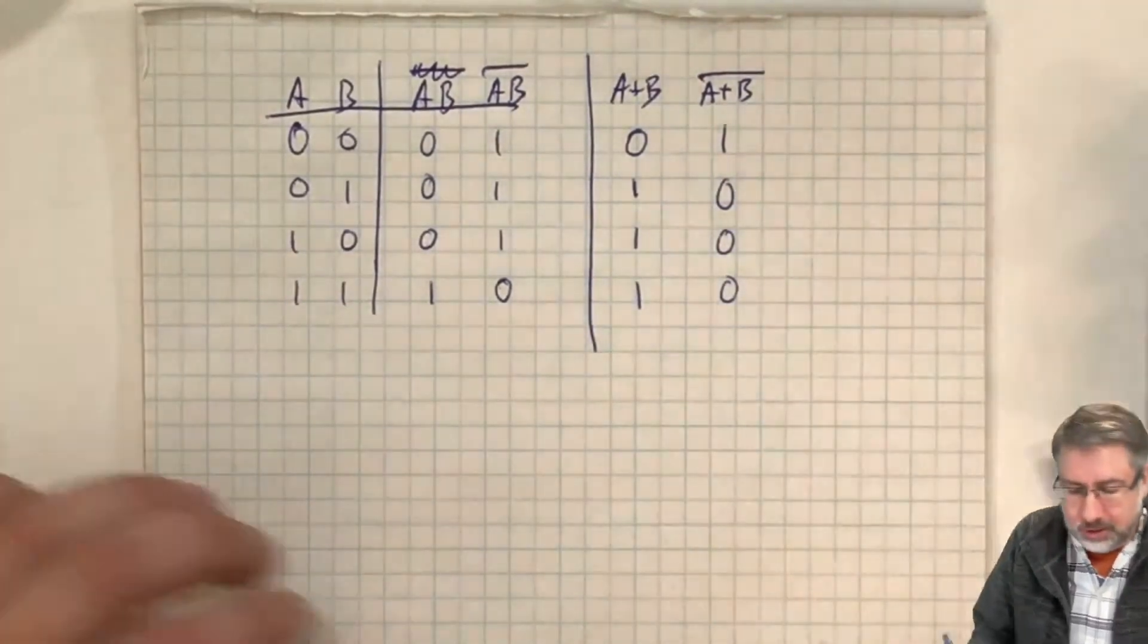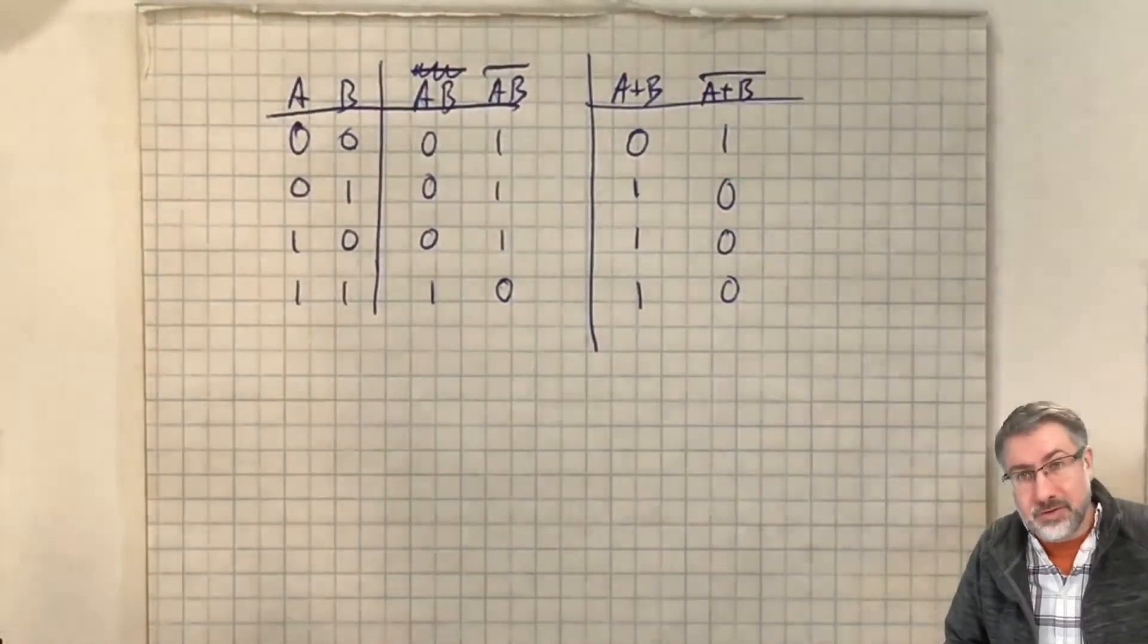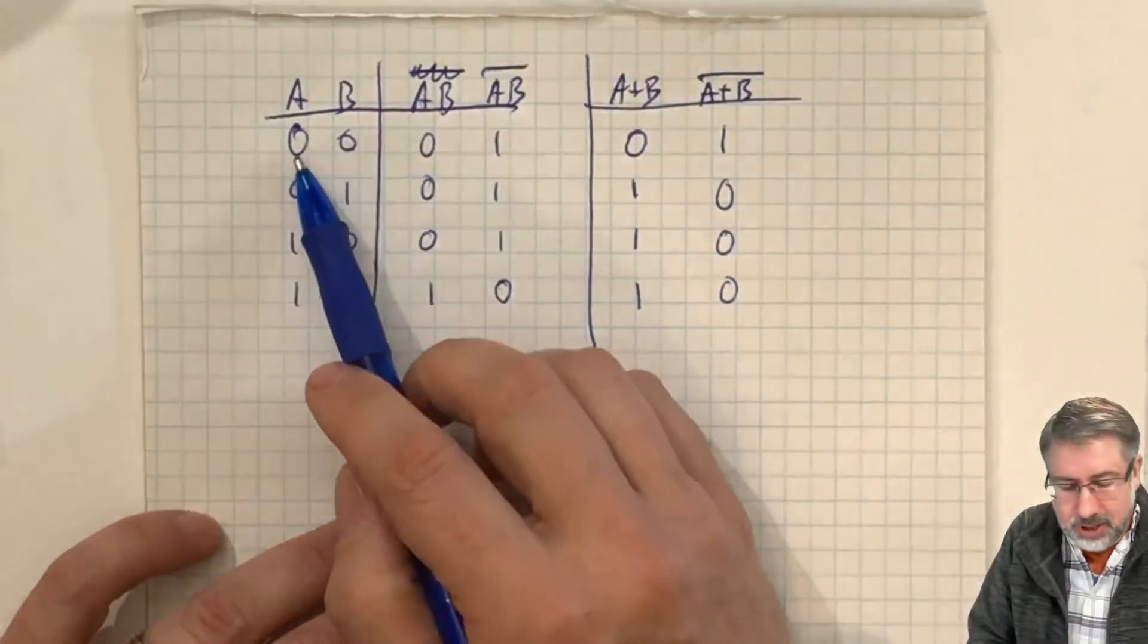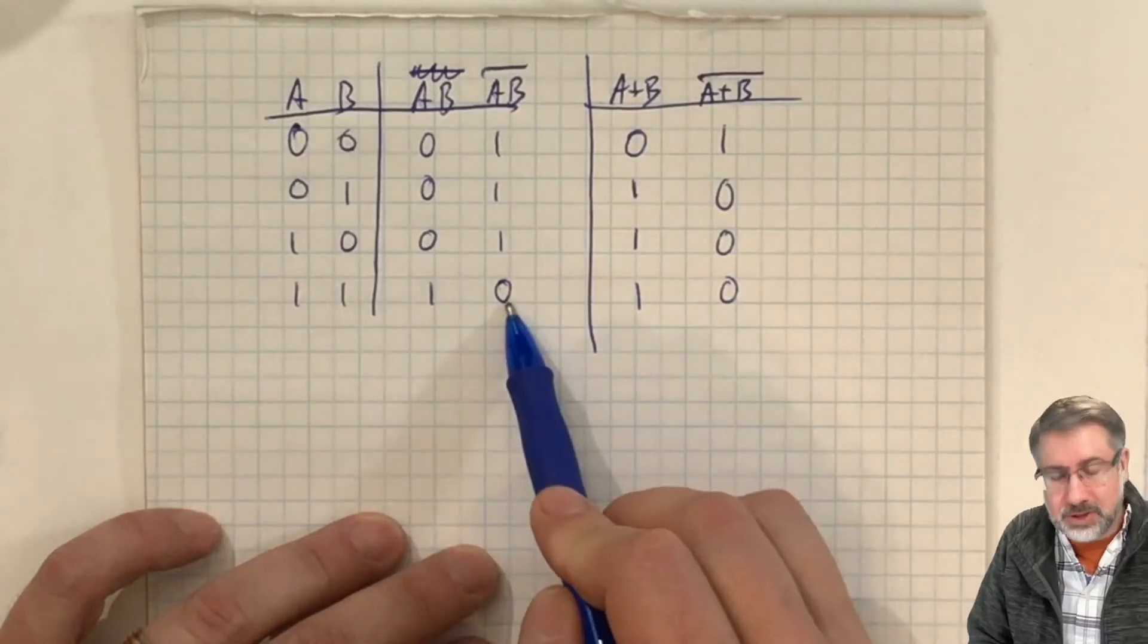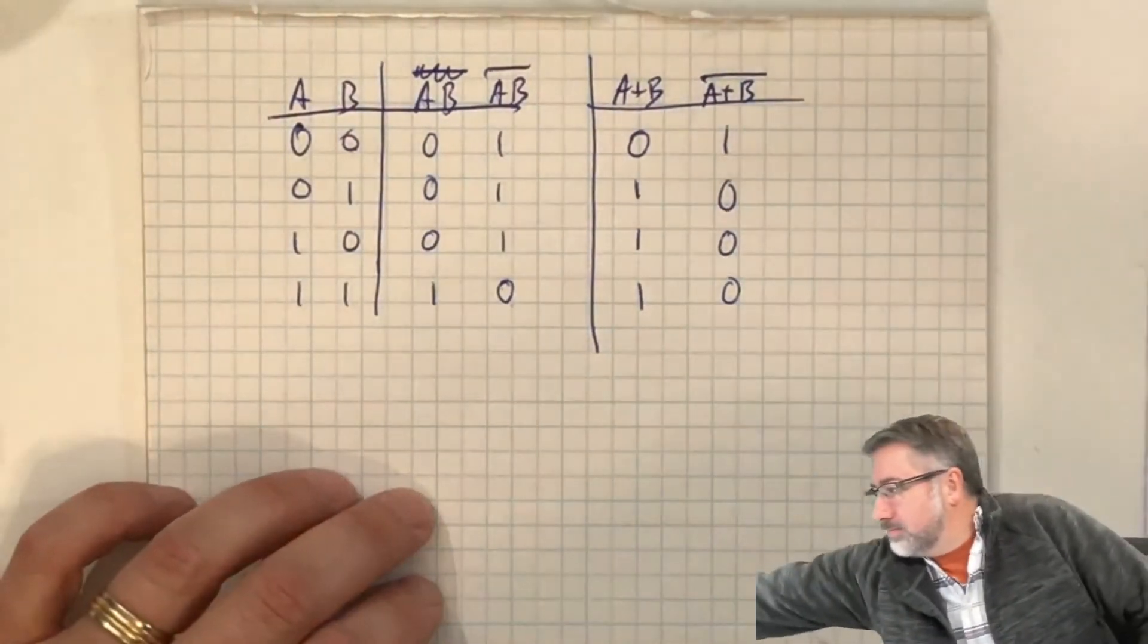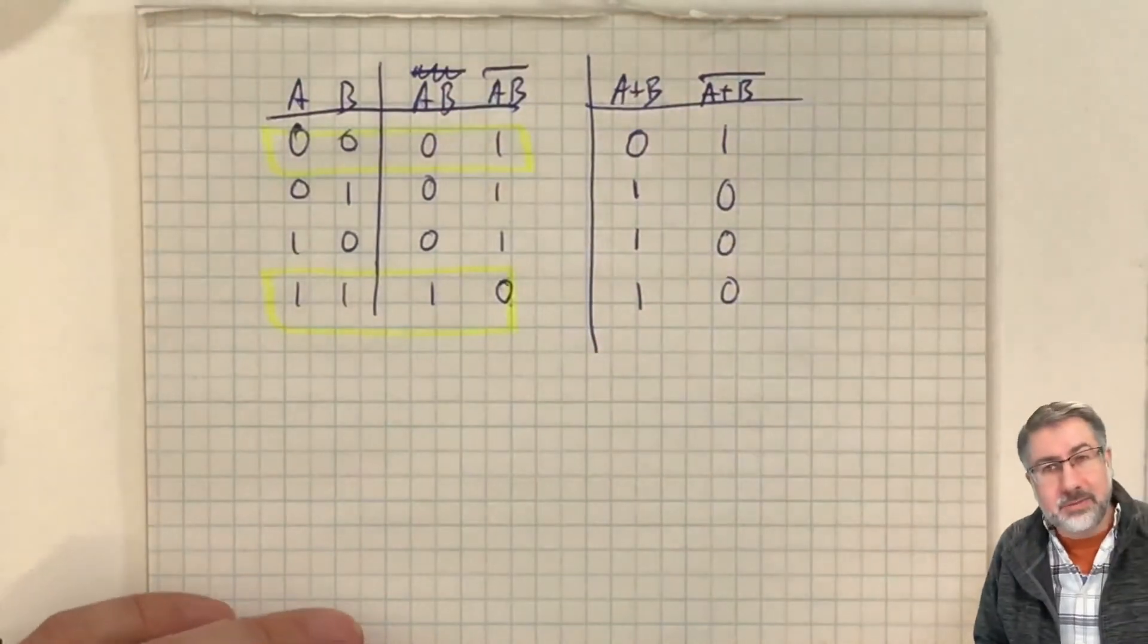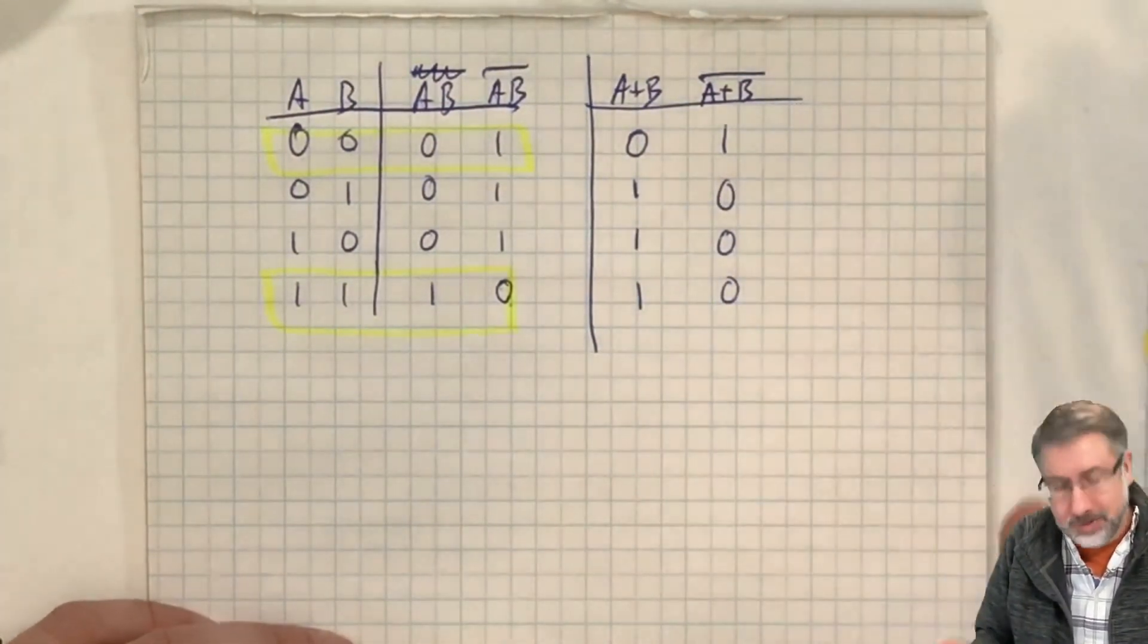So these are our two gates that we're going to look at and say, are they universal? First, can we make an inverter out of them? The answer is yes. All we have to do is say that if the inputs to this gate are the same—in other words, if the inputs are 0, the output is 1; if the inputs are 1, the output is 0. So these two situations occur when the inputs are the same, and the result is the opposite of that paired input.